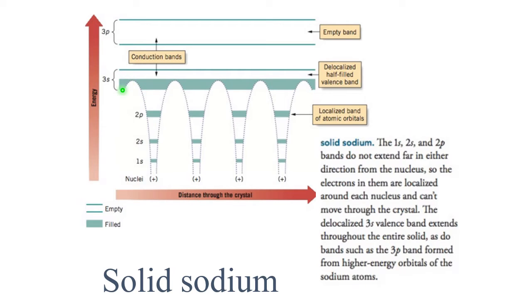These 3s orbitals make an enormous number of molecular orbitals, as many as you have atoms in a chunk of metal. We are talking about billions of billions of orbitals. Half of them are empty because we do not have enough electrons.